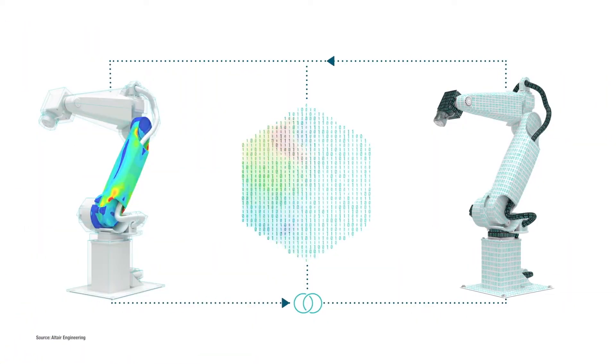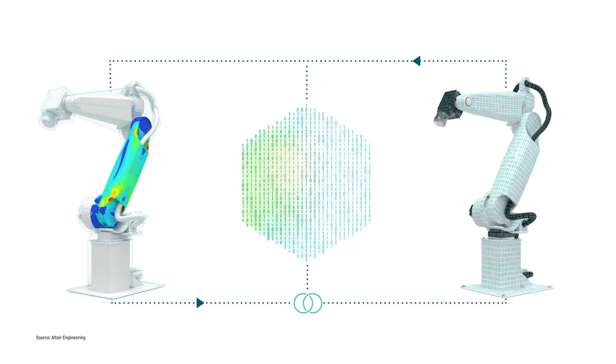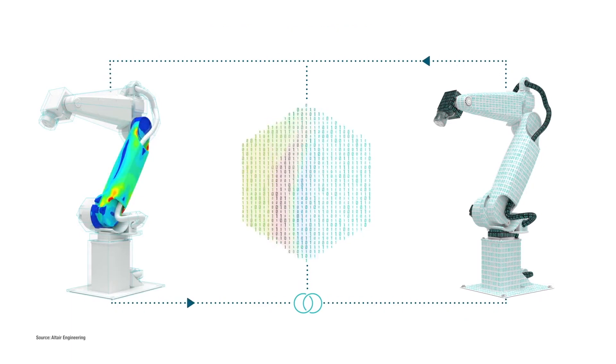I mean, that's one of the key benefits of applying digital twins, even before the concept level, right? Having a holistic understanding of how the complete product functions or behaves is crucial in terms of minimizing the number of design errors that you would discover at the end of the process.